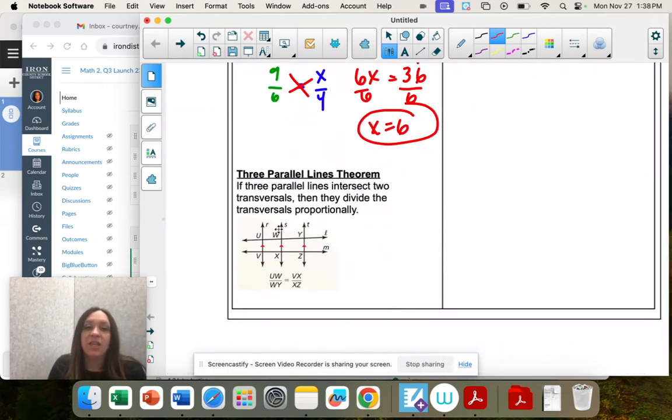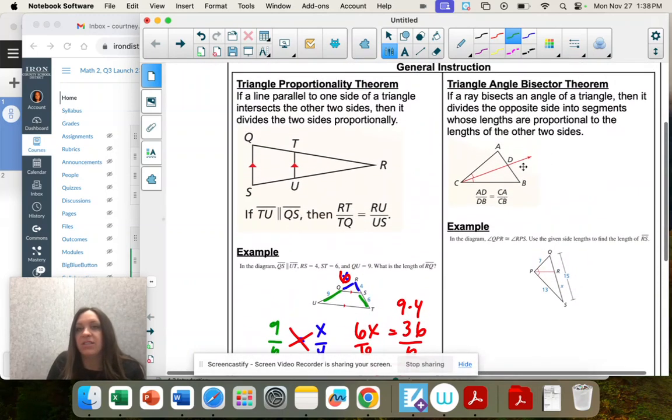Another thing is if we have three parallel lines that intersect two transversals, then they also make proportions. You would write your fractions on the same transversal and set them equal to each other. I don't have an example for that one.